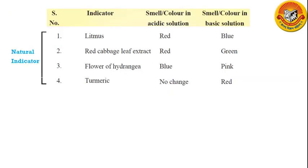Now we will see how these indicators indicate the presence of acids or bases, or how we can check whether a given solution is acid or base using these indicators. Let us first start with natural indicators, beginning with litmus.